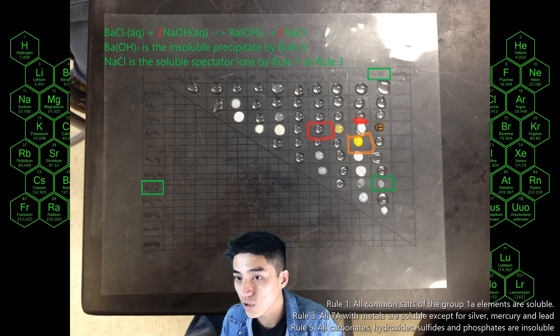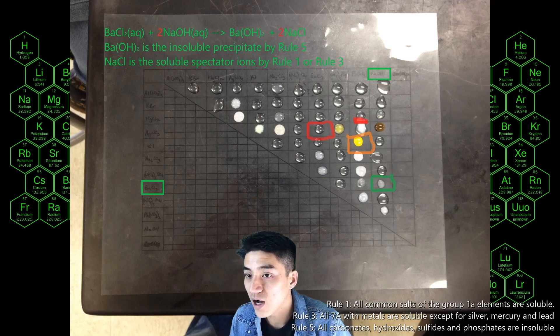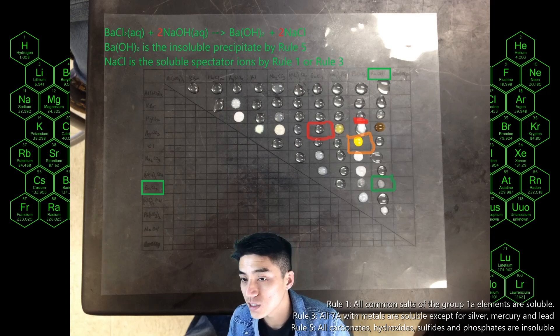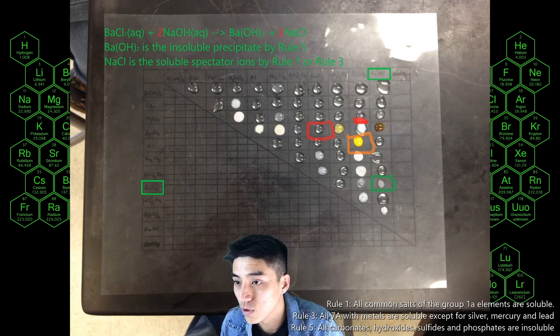So by rule five barium hydroxide is your insoluble precipitate—so that's the rule that states that all hydroxides are insoluble. And then by rule one or by rule three because this has some overlap, NaCl would be your soluble spectator ions.